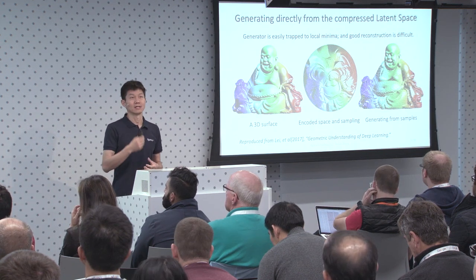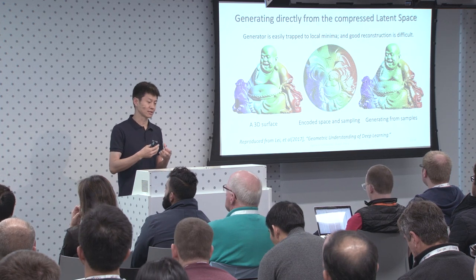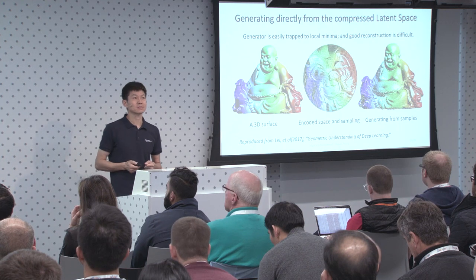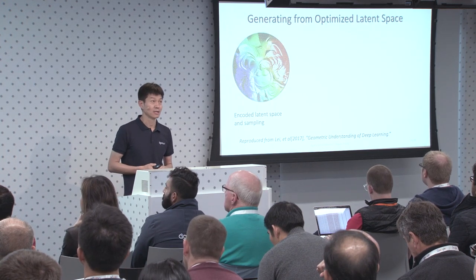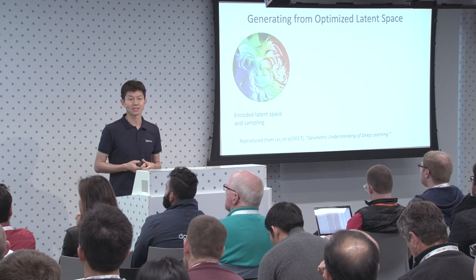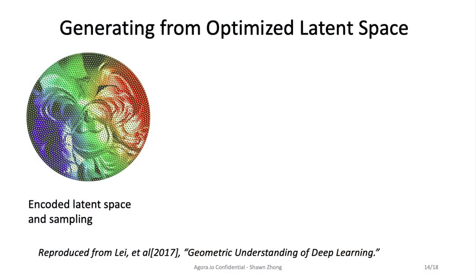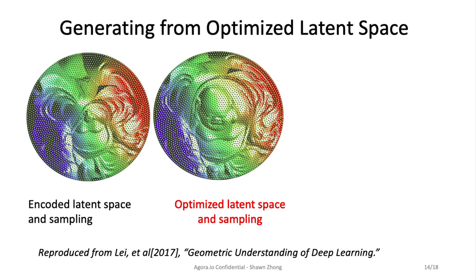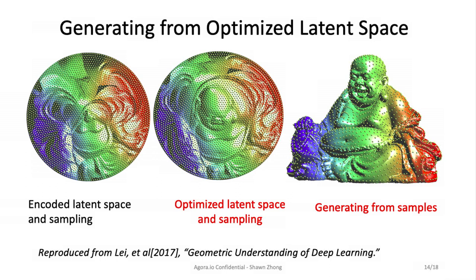The reason is that the latent space is highly irregular and hard to manipulate. So we can perform optimization on the latent space. Starting from the compressed, irregular latent space with some samplings, after optimization, the latent space becomes well-organized. We then sample uniformly from this optimized space and feed those samples into the generator. The result, overlaid on the original picture, is much nicer — the reconstruction is significantly better.